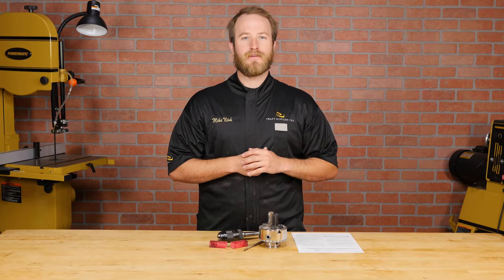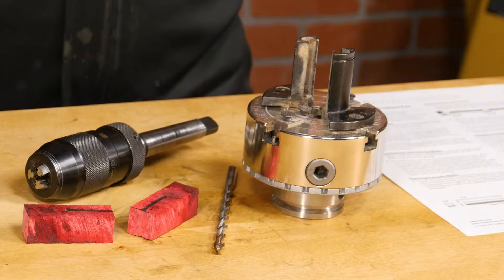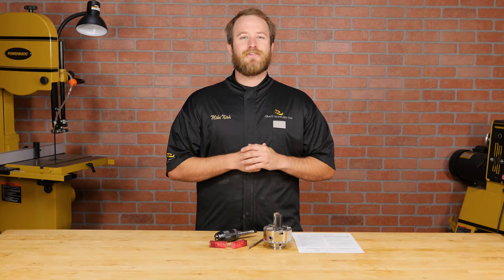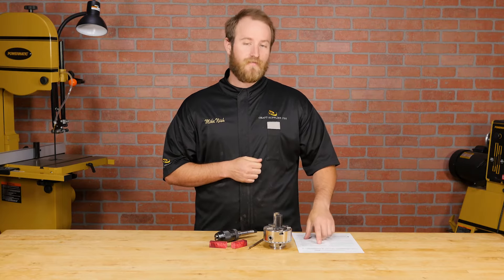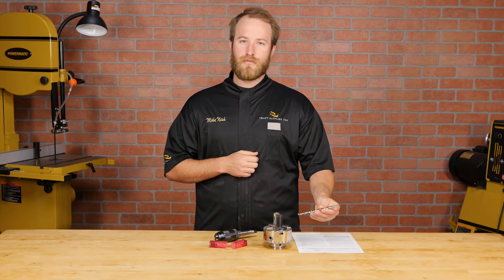Next we need to drill the holes in our pen blanks. I'm going to be drilling on the lathe because it's the most accurate and easiest way to do this. Check your instructions that came with your pen kit to verify you have the right drill bit. For this pen kit, we're going to be using a 7mm drill bit.